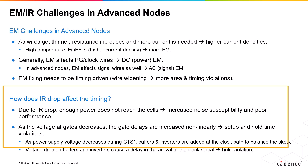As the power supply voltage decreases during critical stages like clock tree synthesis, buffers and inverters are added along the clock path to balance the skew. When the voltage drop happens on these buffers and inverters of the clock path, that leads to a delay in the arrival of the clock signal, directly resulting in hold violation cases. These are the impacts and challenges caused by the EM IR issues in the advanced nodes.